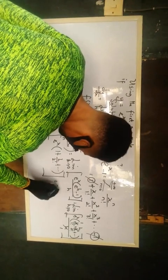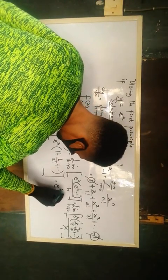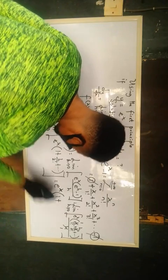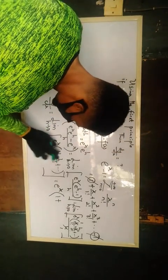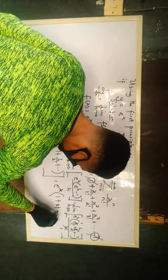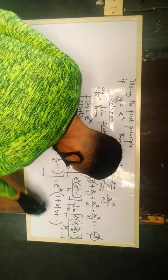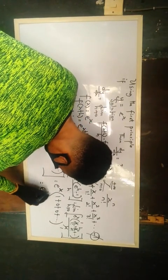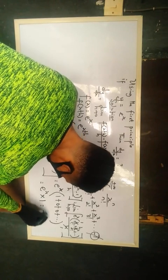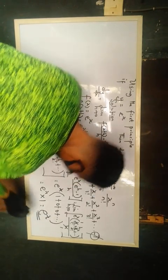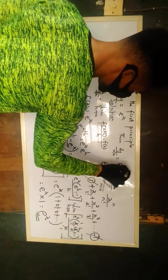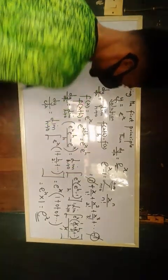So, you know, I have e raised to power x times h over 1 factorial, plus as h is approaching 0 here, we have 0 over 2 factorial, that is 0, plus we'll be getting 0, plus and so on, and this is equal to e raised to power x. Therefore, the answer to this question is e raised to power x.